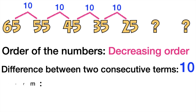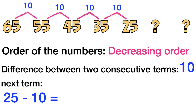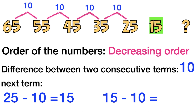Now let's find out the next term. Remember, it is in decreasing order, so we're going to subtract ten from the last term. Twenty-five minus ten equals fifteen — the first missing term is fifteen. And fifteen minus ten equals five — the last missing term is five. So our complete sequence is sixty-five, fifty-five, forty-five, thirty-five, twenty-five, fifteen, and five.